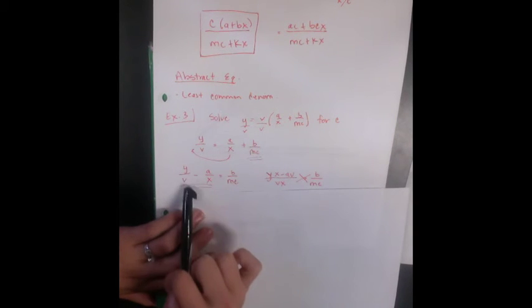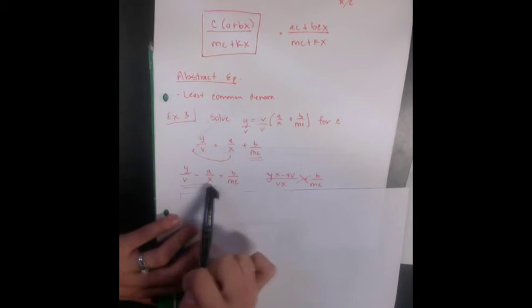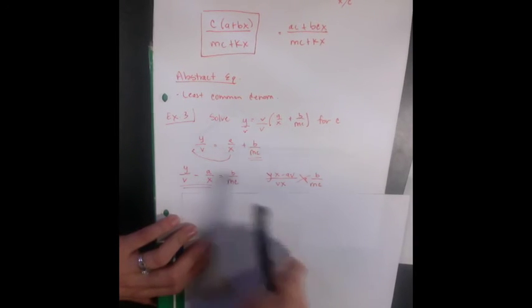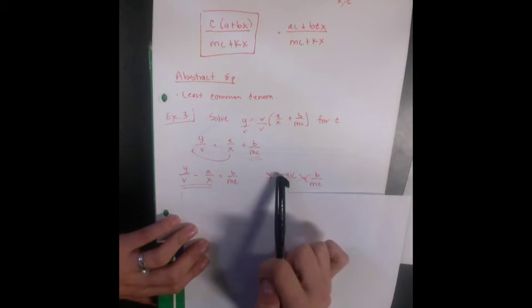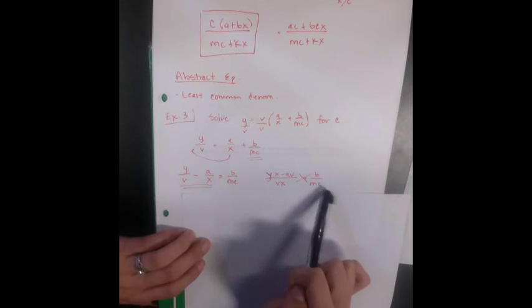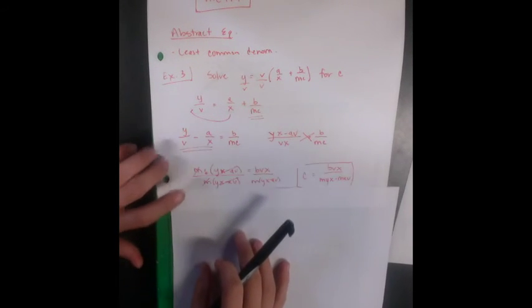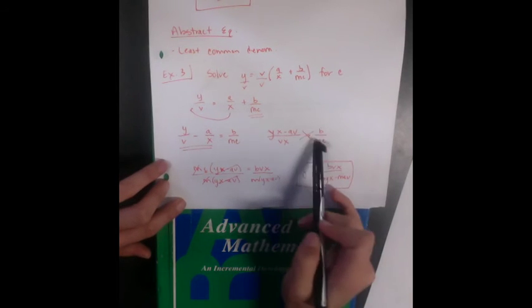So if I do that here I have y over v minus a over x equals b over mc, and I want to combine this side into one fraction giving me yx minus av over x equals b over mc. It doesn't matter that we have no numbers. Variables are the same thing.